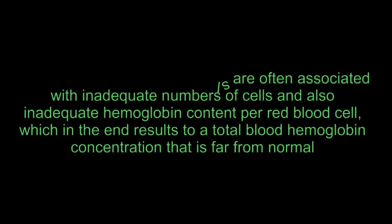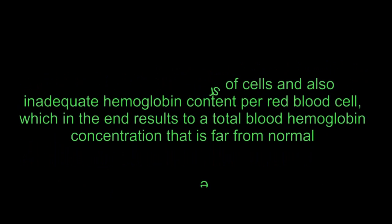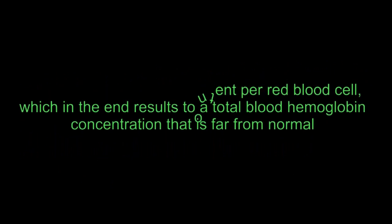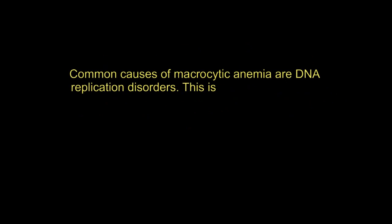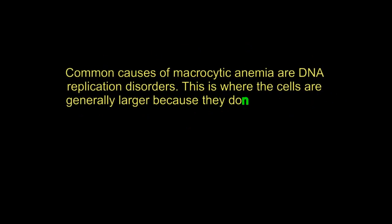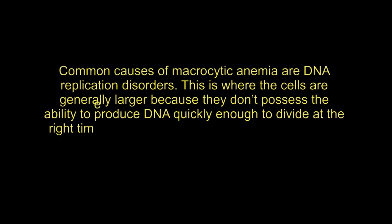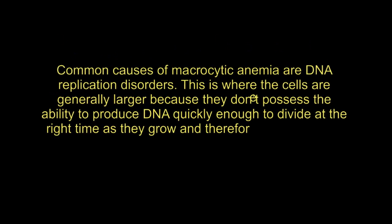Larger red blood cells are often associated with inadequate numbers of cells and also inadequate hemoglobin content per red blood cell, which in the end results in a total blood hemoglobin concentration that is far from normal. A common cause of macrocytic anemia is DNA replication disorders, where cells are generally larger because they don't possess the ability to produce DNA quickly enough to divide at the right time.